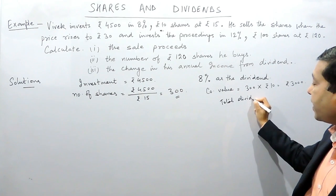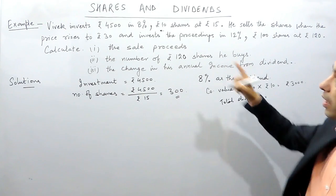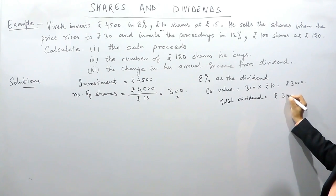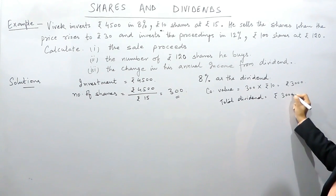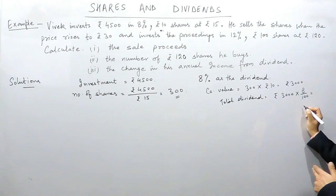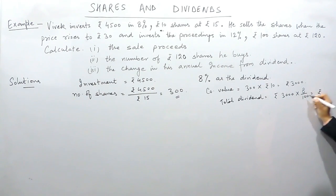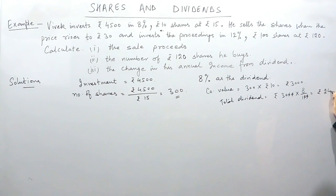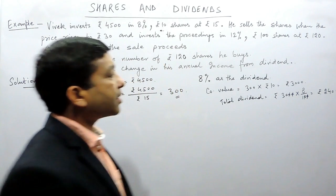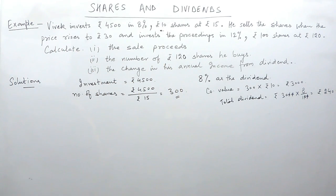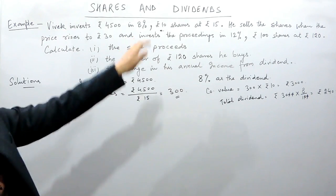So the total dividend Vivek is receiving in the first case is rupees 3000 multiplied by 8%, which comes out to be rupees 240. So in the initial case, Vivek is getting a dividend of rupees 240.